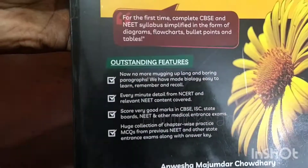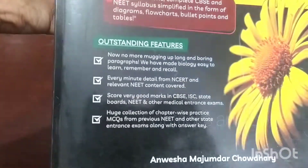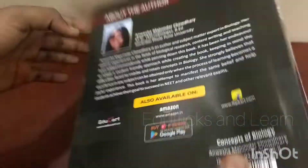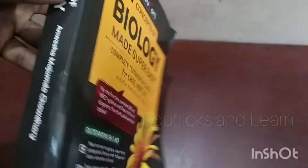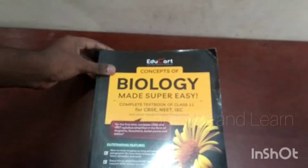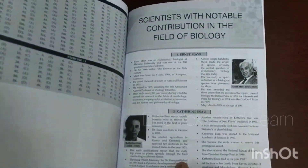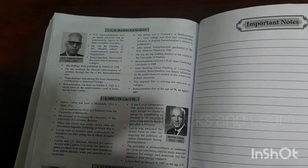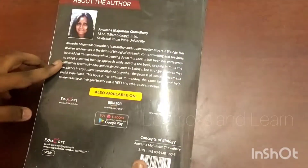They have also given paragraph-style questions with NCERT and NEET syllabus coverage, and a huge collection of chapter-wise practice MCQs from all over India. At the end of the book they have given profiles of scientists who contributed to biology in the Class 11 syllabus — for example, Ernst Mayr — covering their life history, what they did, when they were born, and important questions related to each scientist.